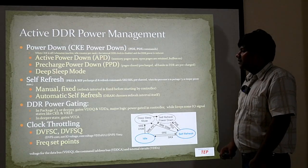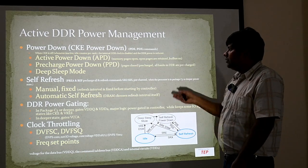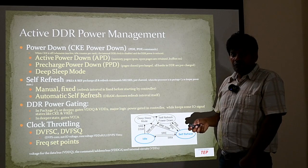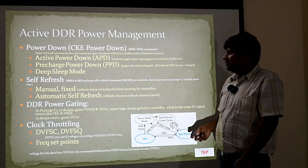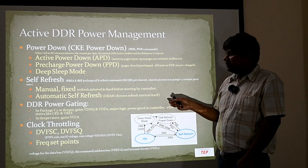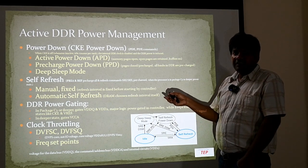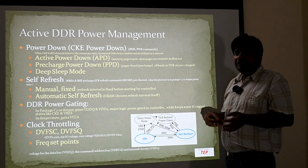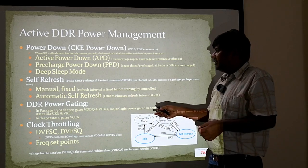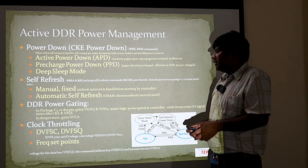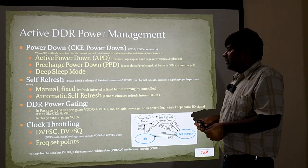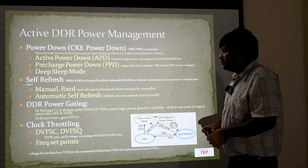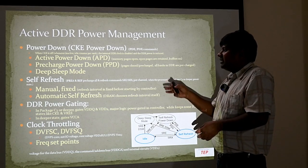In DDR there are power-down modes, but before that let's understand self-refresh. In low-power modes of the SoC, the DDR controller also goes into low-power mode. In order to facilitate that, DDR memory needs to retain its content by itself and be refreshed at regular intervals. Normally when the DDR controller is active, it does that job. When the DDR controller goes into sleep mode and memory content needs to be retained, it enters self-refresh mode. There is automatic self-refresh where the DRAM itself chooses the refresh interval, and manual or fixed mode where the controller provides the refresh interval. Self-refresh facilitates the DDR controller going into deeper power-down modes.